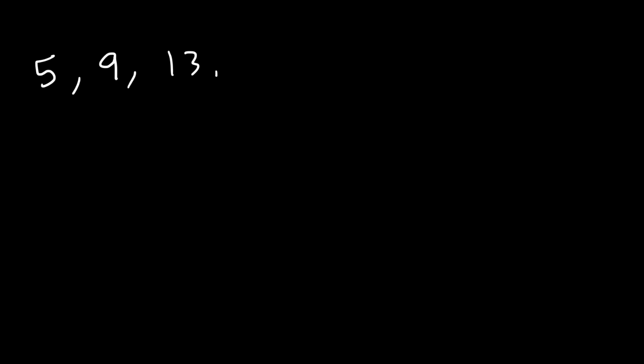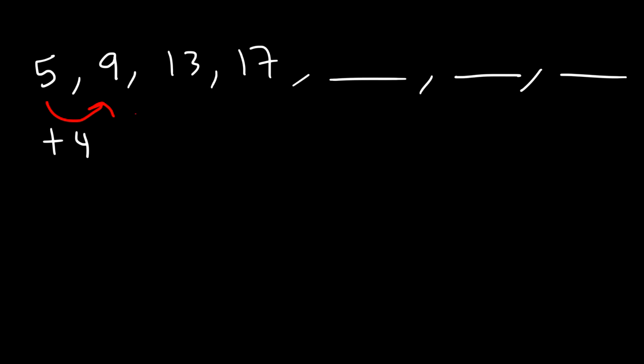Now let's work on another example. Let's say if we have these numbers 5, 9, 13, 17. Find the next three numbers in the sequence. Feel free to pause the video. Notice that 5 differs from 9 by 4 units. If we add 4 to 5 it will give us 9, and if we add 4 to 9 it will give us 13. So therefore the common difference is 4. To find the next number we need to add 4 to 17. 17 plus 4 is 21. 21 plus 4 is 25. Then 25 plus 4 is 29.